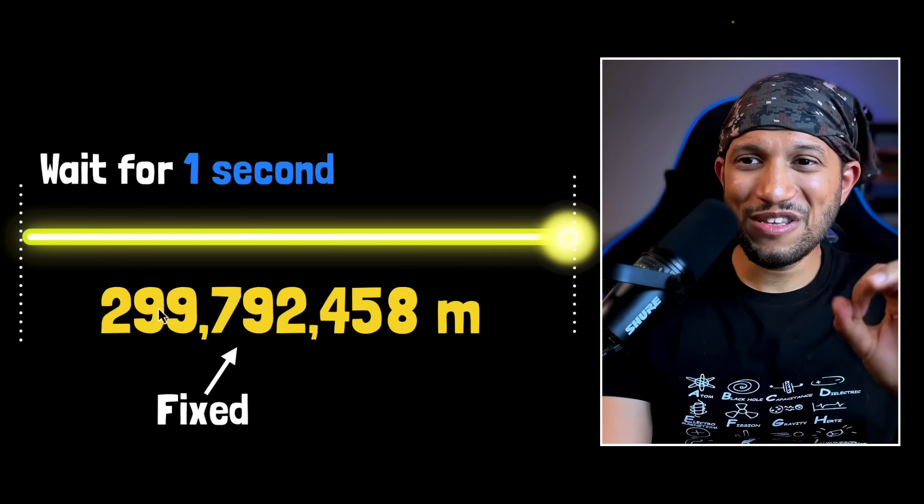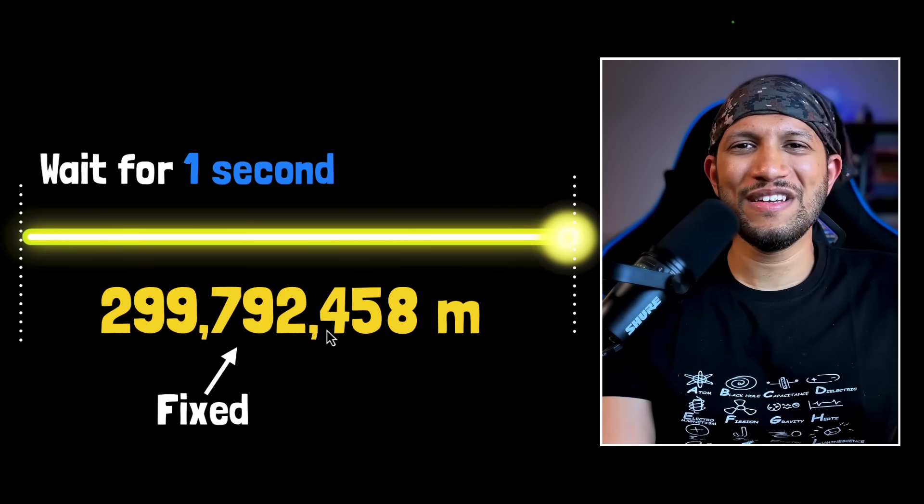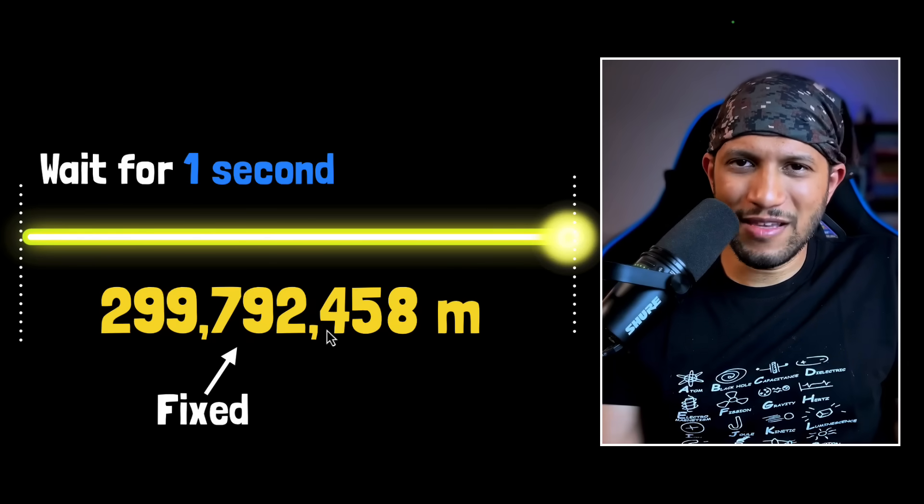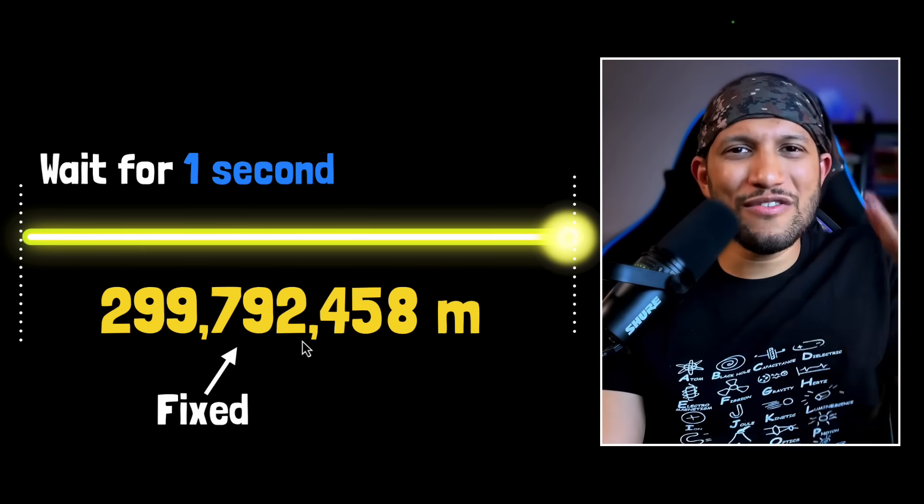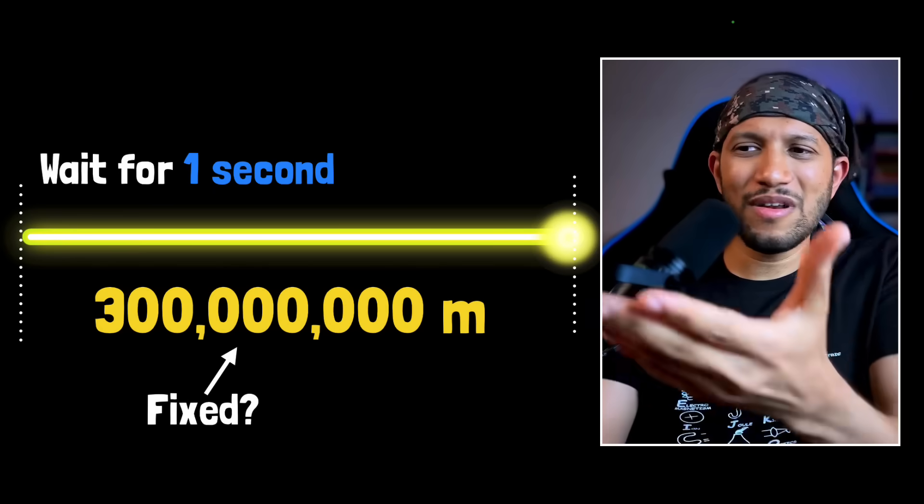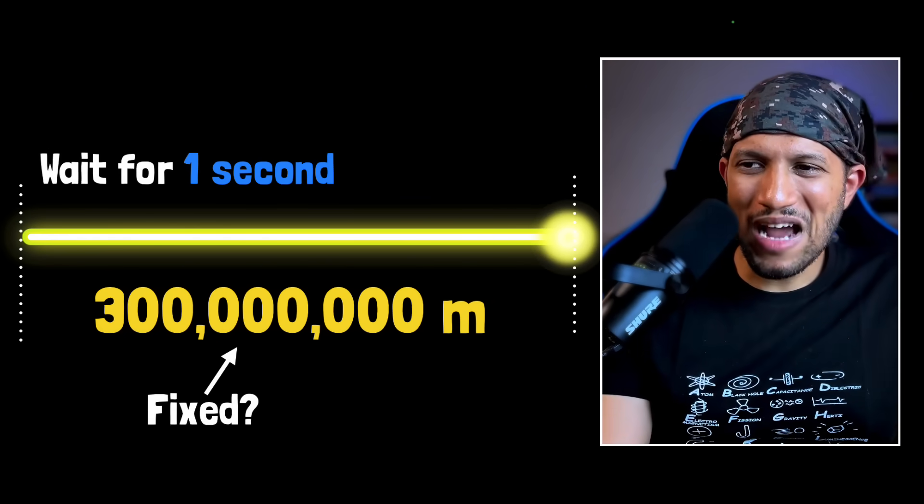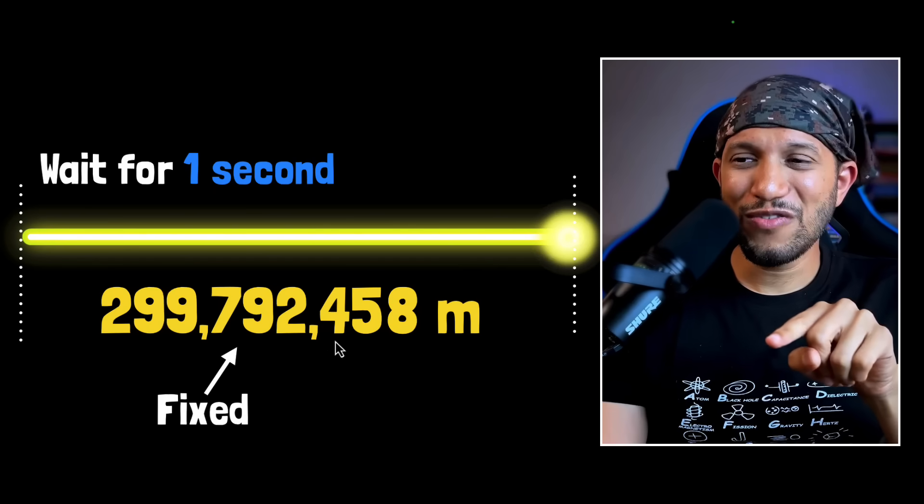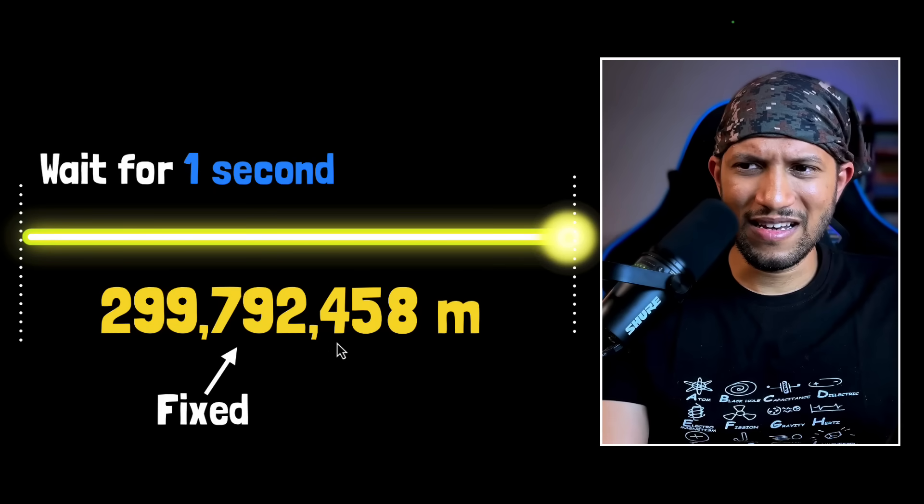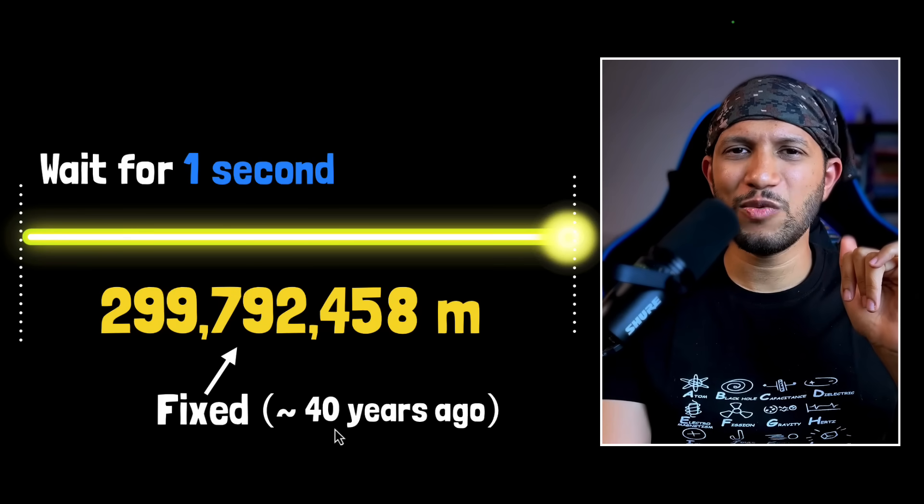But now, we can come back to the original question that my student asked. Her question was, why did we fix this number to be this much? I mean, we could have fixed this number to be anything that we want, but why this ugly looking number? I mean, at the least, we could have rounded it off to a very nice number like 300 million, which we often approximate to. Then, why did we do this? Ah, the thing is, this definition of the meter happened very recently, about 40 years ago. Somewhere in 1980s, we defined the meter this way.